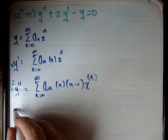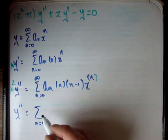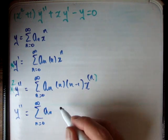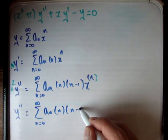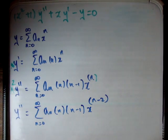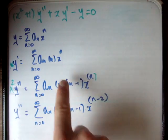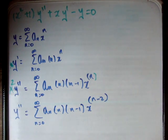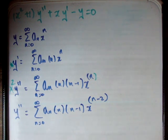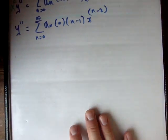We know that y double prime is equal to the sum from n equals 0 to infinity of a sub n times n times n minus 1 times x to the n minus 2. This one is different to the other three, because it has x to the n minus 2, even though it does begin at the correct point. So what we need to do is change this.